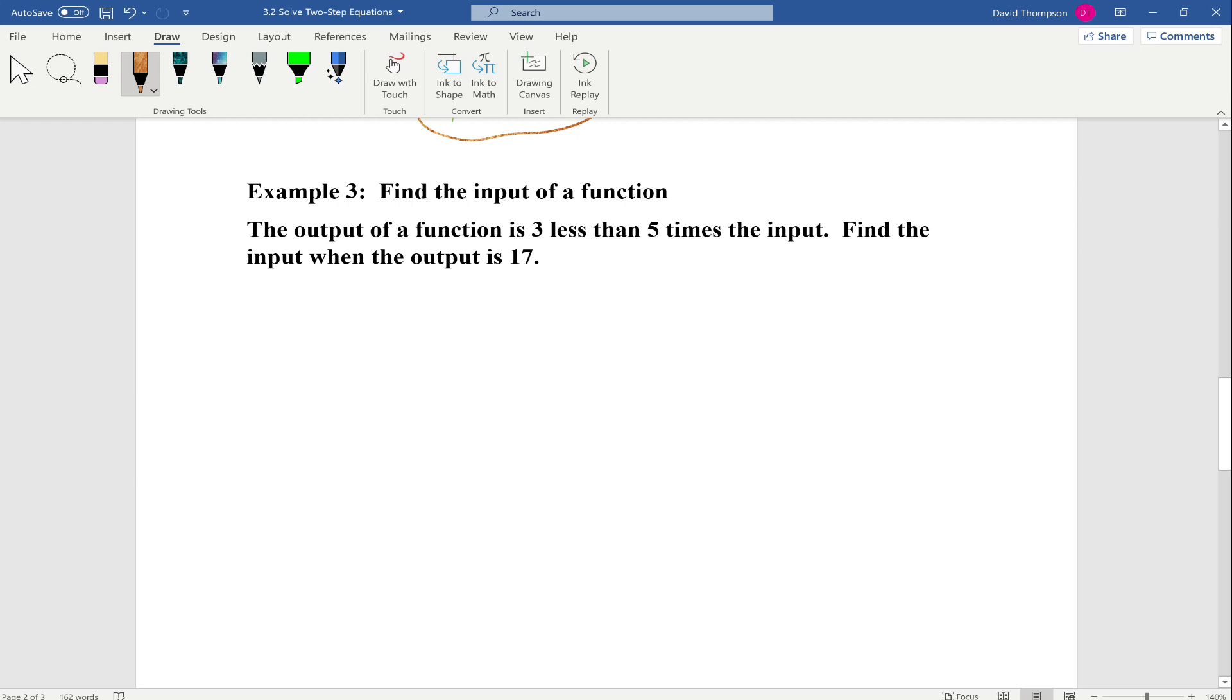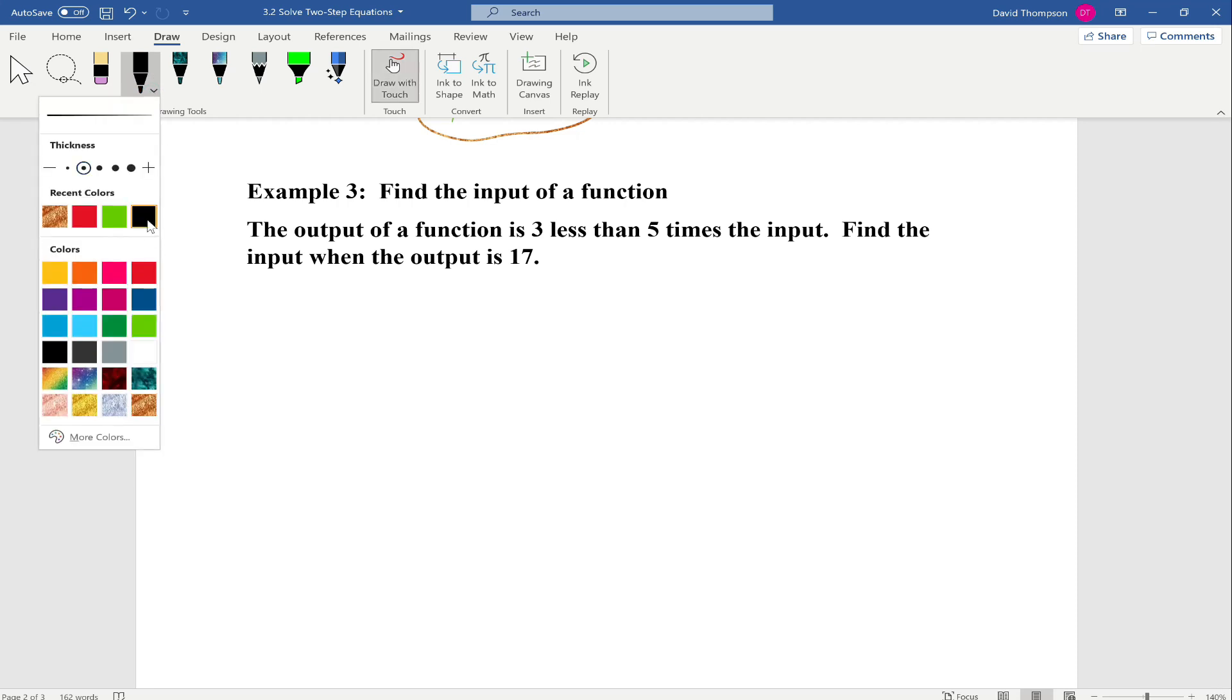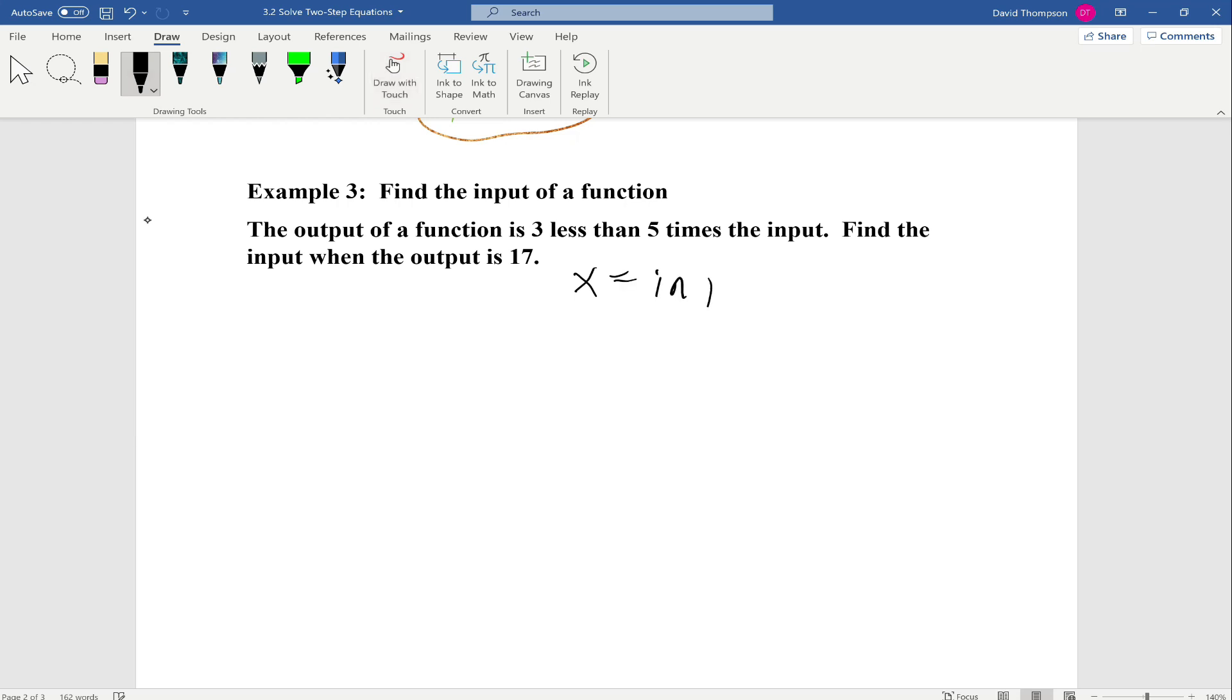Example 3, find the input of a function. The output of a function is 3 less than 5 times the input. So let's call the input x and we'll call the output y. So the output of a function is three less than five times the input. So you can write this is five x minus three, and find the input when the output is 17. So the output is 17, so we're going to say five x minus three equals 17.